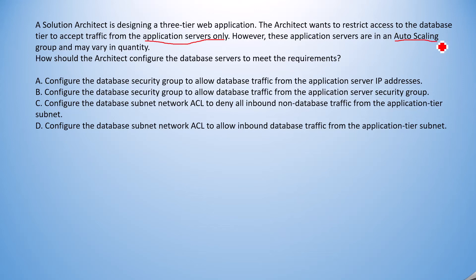This is also an important hint — auto scaling means the quantity may vary. Whenever we talk about quantity varying, the private IP address may change for newly launched instances. But since it's an auto scaling group, we assume the security groups will remain the same when launching new instances. How should the architect configure the database servers to meet the requirements?